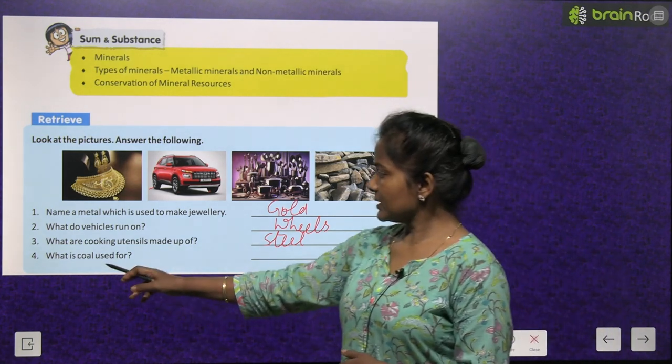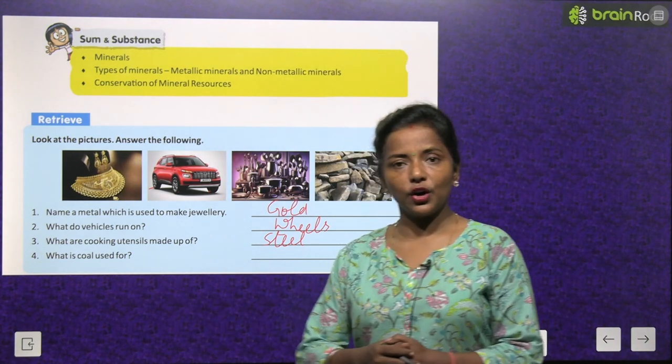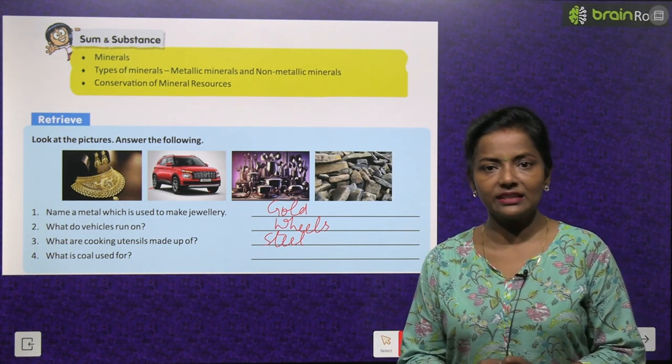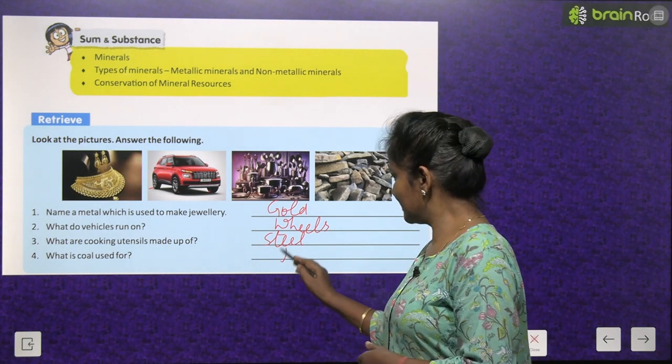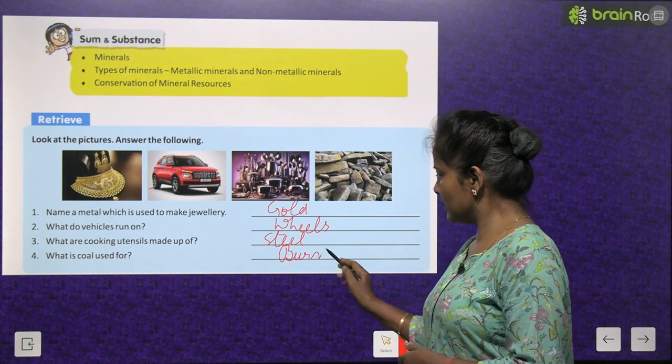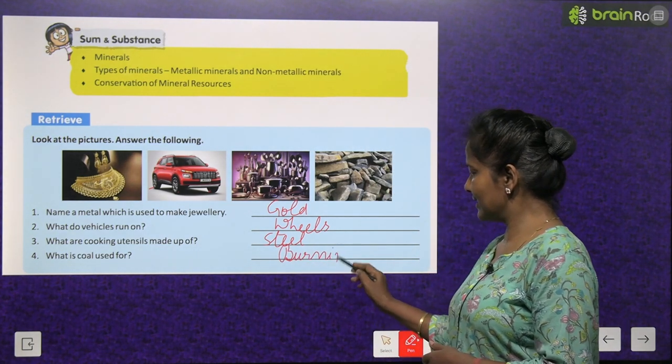And what is coal used for? Coal kis liye use kiya jata hai? It's used for burning. Coal is used for burning.